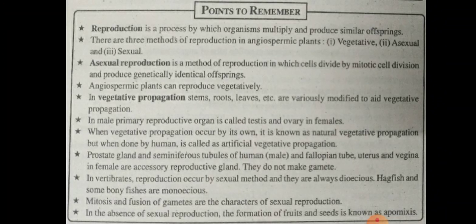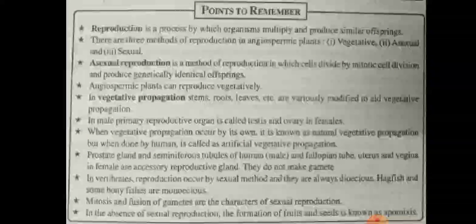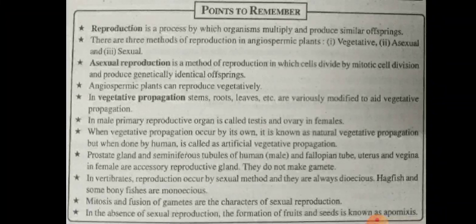In males, the primary reproductive organ is called testes, and ovaries in females. When vegetative propagation occurs on its own, it is known as natural vegetative propagation, but when done by humans it is called artificial vegetative propagation.